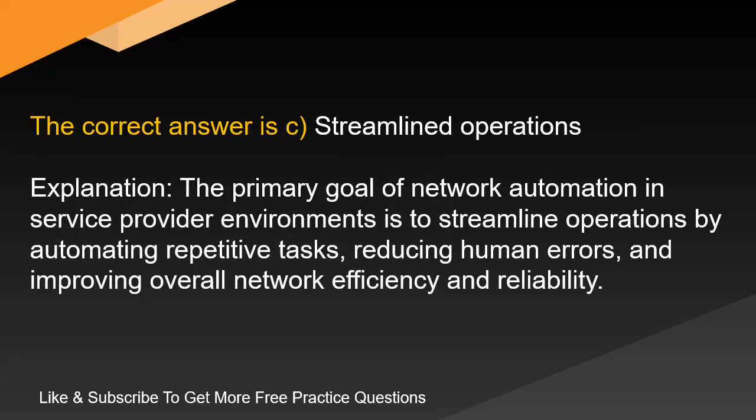The correct answer is C. Streamlined operations. Explanation: The primary goal of network automation in service provider environments is to streamline operations by automating repetitive tasks, reducing human errors, and improving overall network efficiency and reliability.